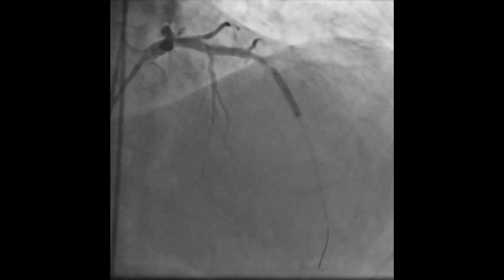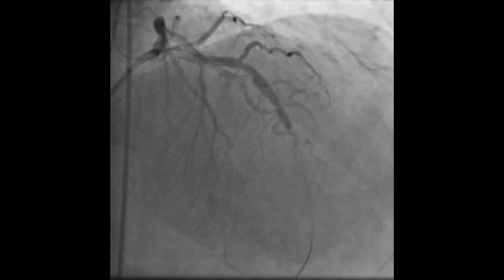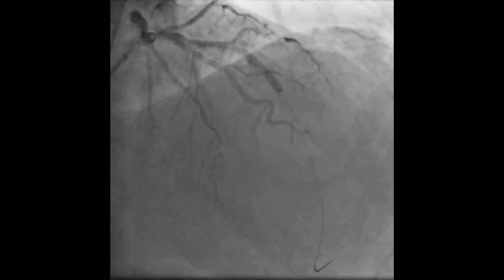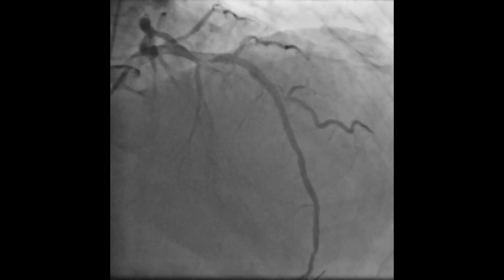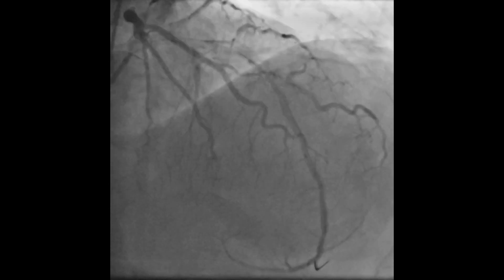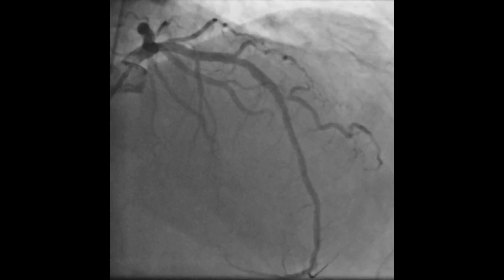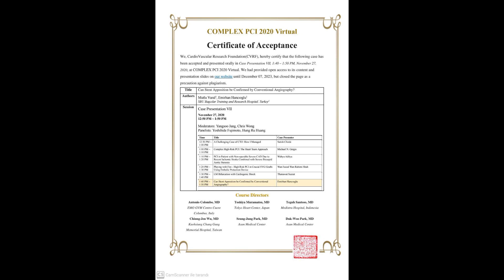We applied POT, and as you can see, there is no perfusion into the side branch, confirming stent apposition in the proximal main vessel. This is the final angiography. Although the ostium of the side branch is pinched, perfusion is good, there is no chest pain, and there are no ECG changes. The committee gave us a certificate for this case.